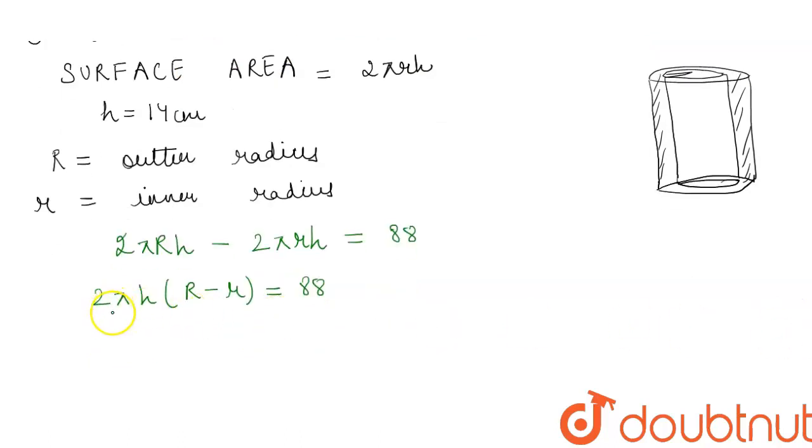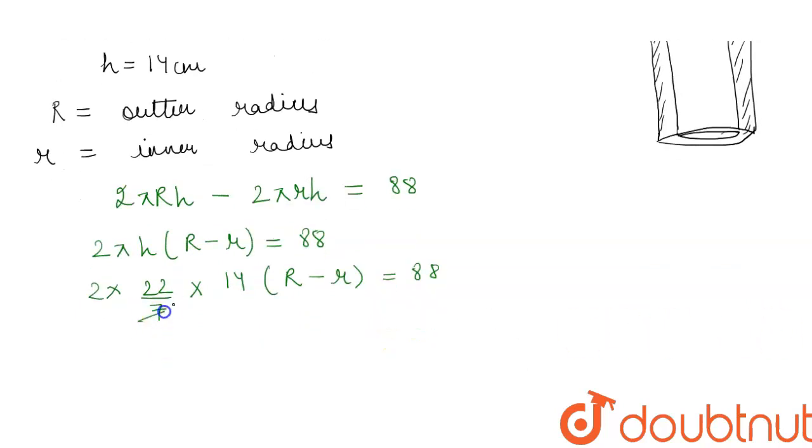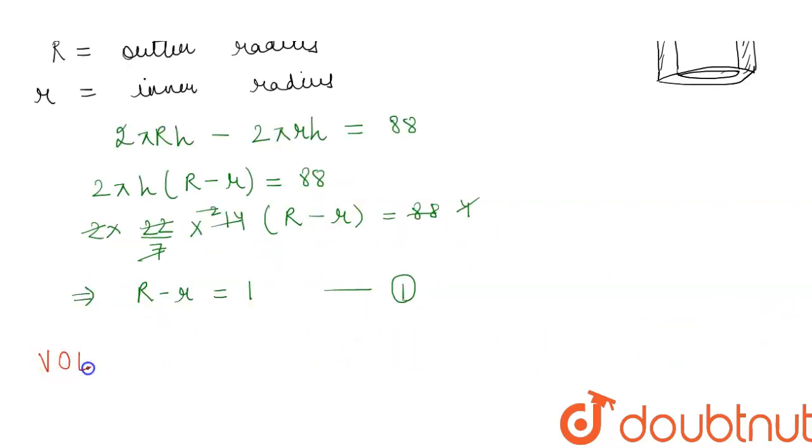Now putting in the values, we will get 2 × 22/7 × 14 × (R - r) = 88. This will cancel by 7, this becomes 4 times, and these two cancel out. From here we get the value of capital R minus small r to be equal to 1. Let this be our equation number one.